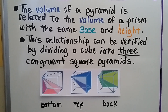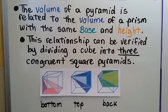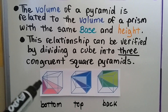The volume of a pyramid is related to the volume of a prism with the same base and height. This relationship can be verified by dividing a cube into three congruent square pyramids. Here we have a cube split into three congruent square pyramids.